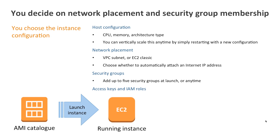At this point you choose which Virtual Private Cloud or VPC subnet you want to put it in, or whether it's EC2 Classic. When deployed within a VPC, you can choose whether to automatically attach an elastic IP or public IP address. You can also choose up to five security groups, which can be added and removed at any time, and choose the IAM role for the instance.